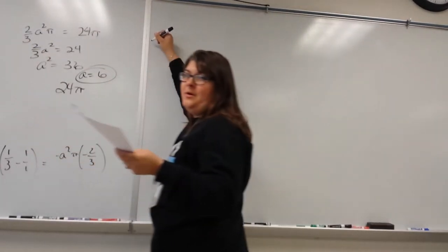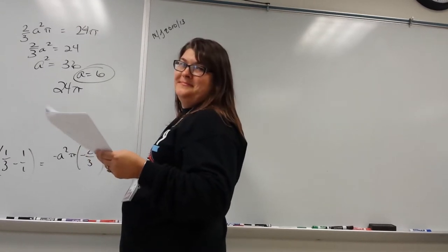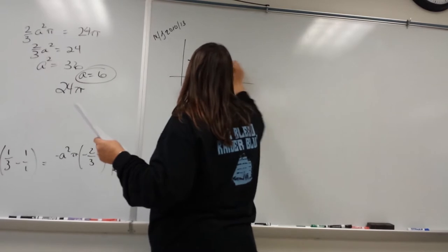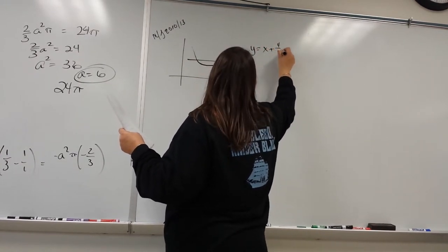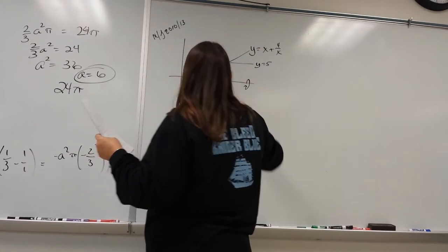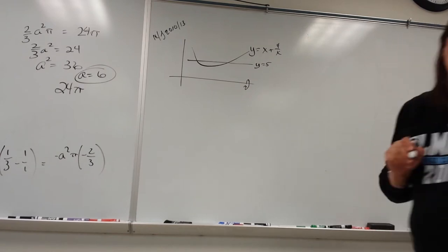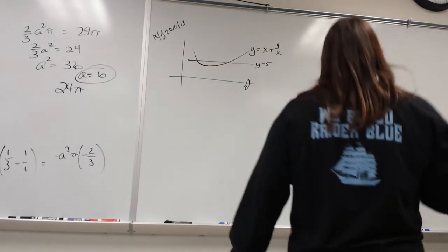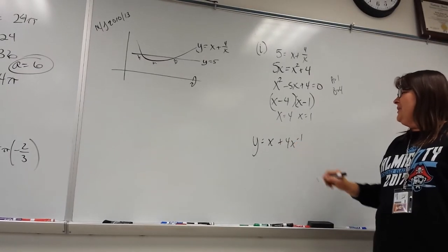This problem says find the coordinates of A, B, and M — where M is the minimum point. So we have y equals x plus 4x to the negative one. We're going to find y prime: y prime equals 1 plus negative 4 x to the negative 2, so 1 minus 4 over x squared. Setting it to zero as Nick suggested: 1 minus 4 over x squared equals zero, so 1 equals 4 over x squared, giving x equals positive or negative 2.